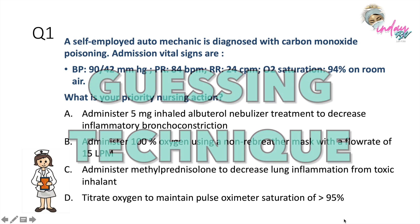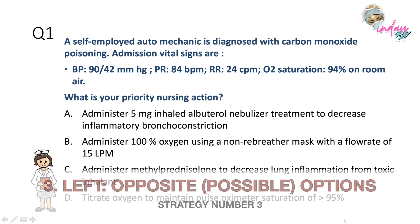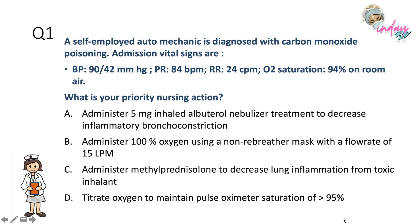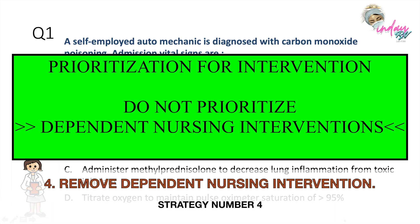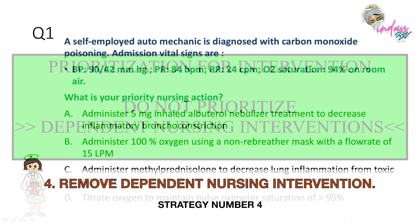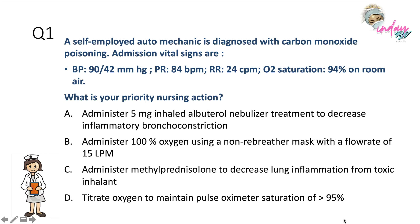First, we are going to eliminate same choices, so we will be left with two possible options. We need to take note of interventions that are dependent nursing interventions — giving medications is part of dependent interventions. The obviously dependent choices here are administering 5mg inhaled albuterol and administering methylprednisolone, since they are both giving or administering medications.